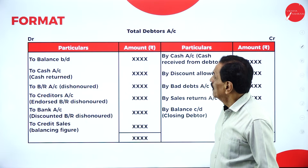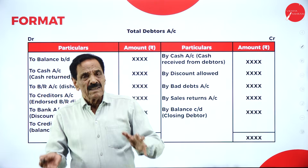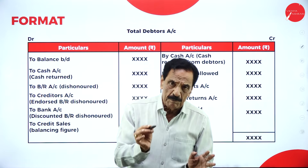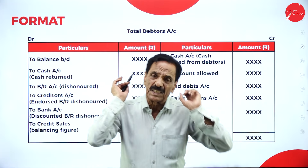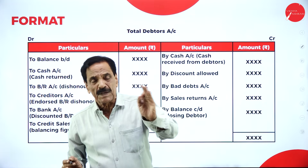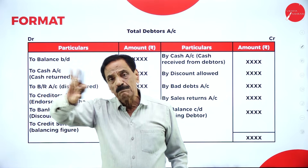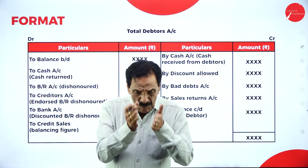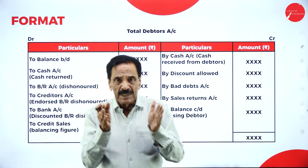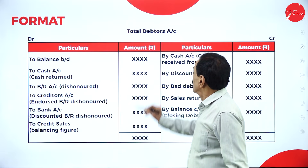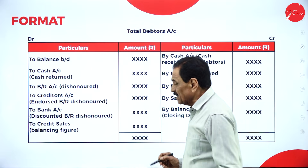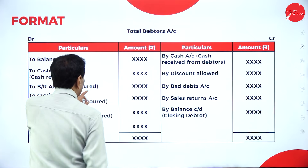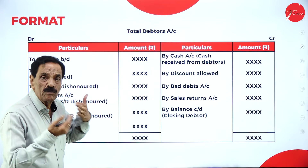To convert single entry to double entry system, we have to prepare a debtor account and creditor account, which are compulsory. Sometimes you also have to prepare bills receivable and bills payable accounts. First, you have to learn the format of the debtor and creditor accounts. The total debtors account is generally used to find out credit sales or closing debtors. The balance brought down means opening debtor — how much money is to be received.